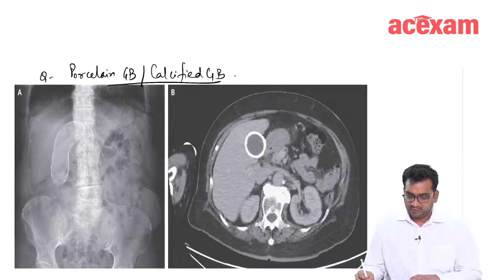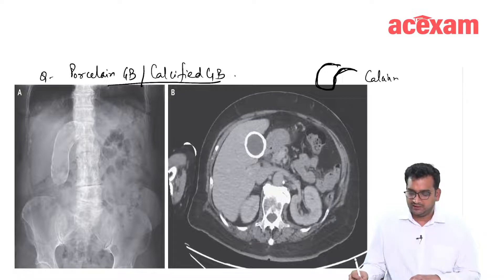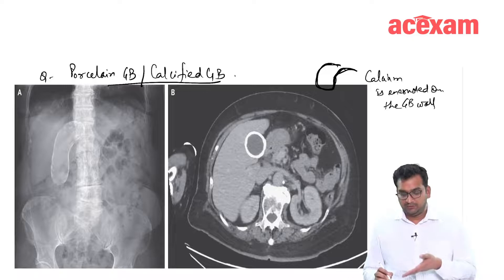Here the gallbladder wall is having calcifications and there is encrustation. The calcium is encrusted on the gallbladder wall. It is visible on x-ray also and it is visible on CT also.